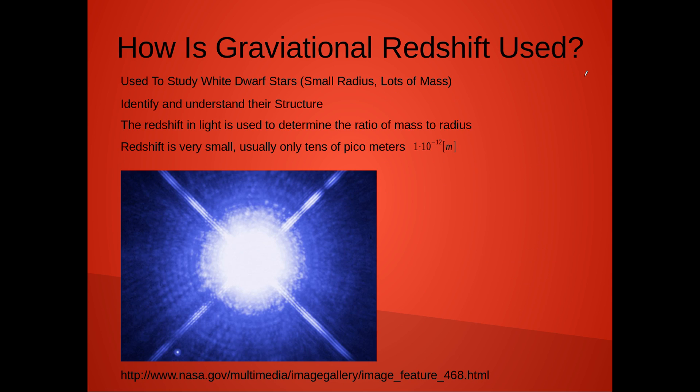So how is gravitational redshift used? Well, astronomers use it to study white dwarf stars, specifically, because they have a small radius and lots of mass. They're basically used to identify and understand their structure, because astronomers can use the redshift in light to determine the mass and radius of the star.